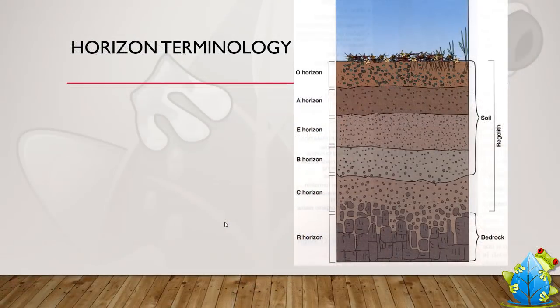We've zoomed into our horizons, and as you can see we have an O, an A, an E, a B, a C, and an R. These are the layers of soil, and the idea is that each one of these layers is distinct and essentially has a different thickness and certain features that go along with it.